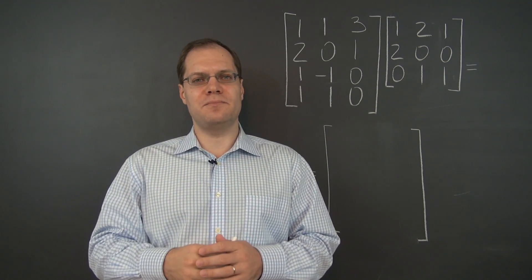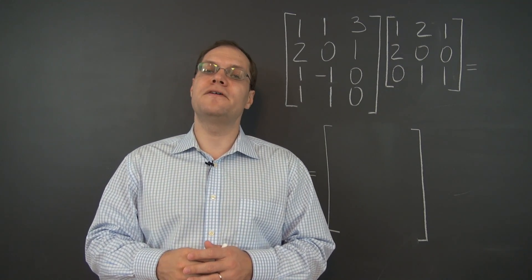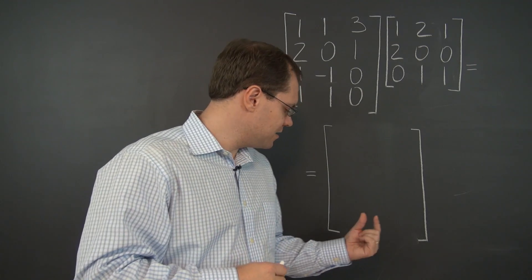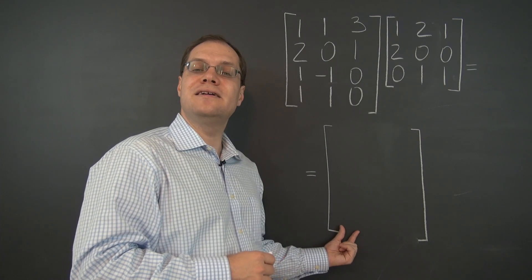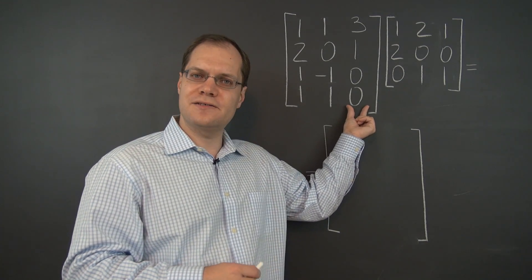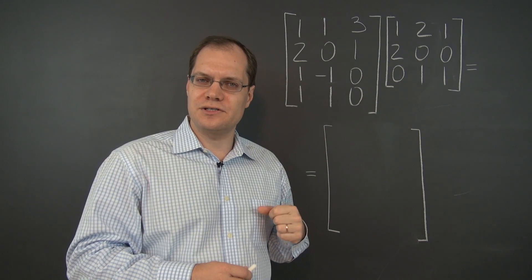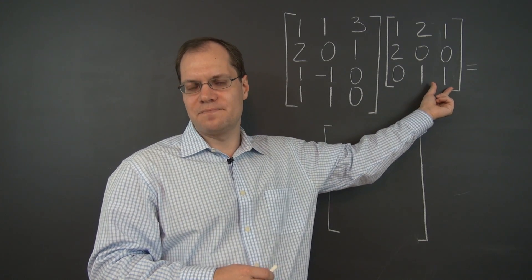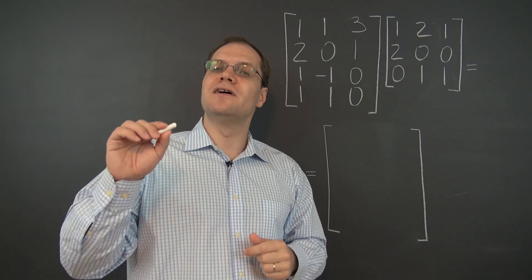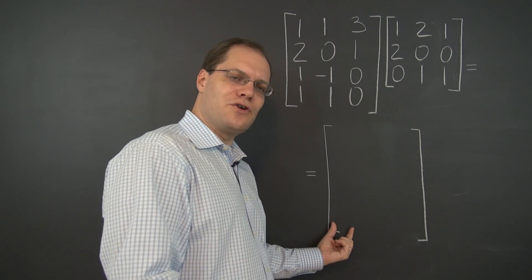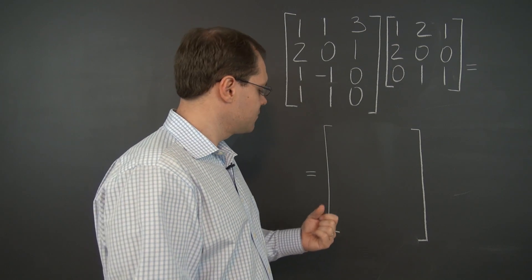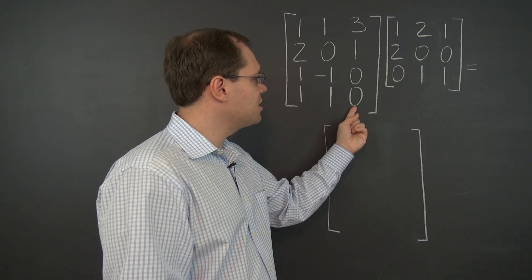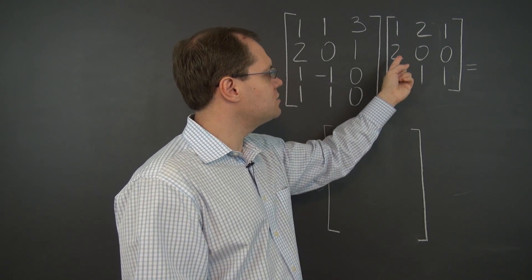There are actually three perspectives on matrix multiplication, and you're familiar with one of them, called the columns perspective, where the columns of the result are the linear combinations of the columns of the matrix on the left, where the coefficients for those linear combinations come from the columns of the matrix on the right. Let's use the columns perspective to establish the first column of the result. The first column of the result is the linear combination of these three columns with coefficients one, two, and zero.